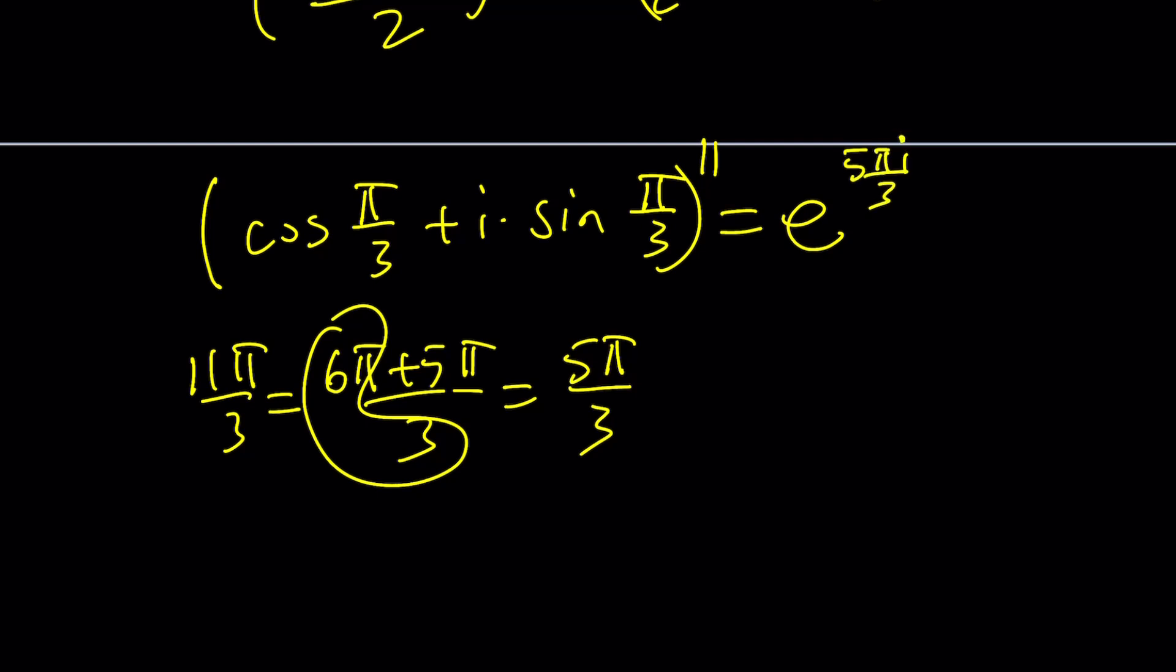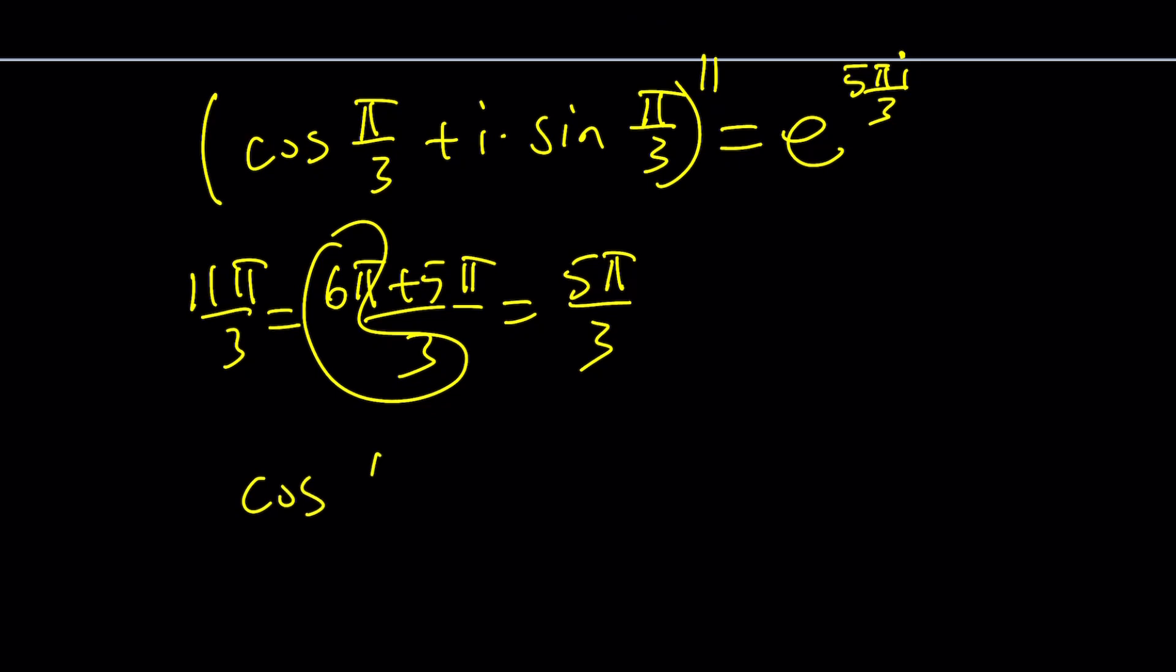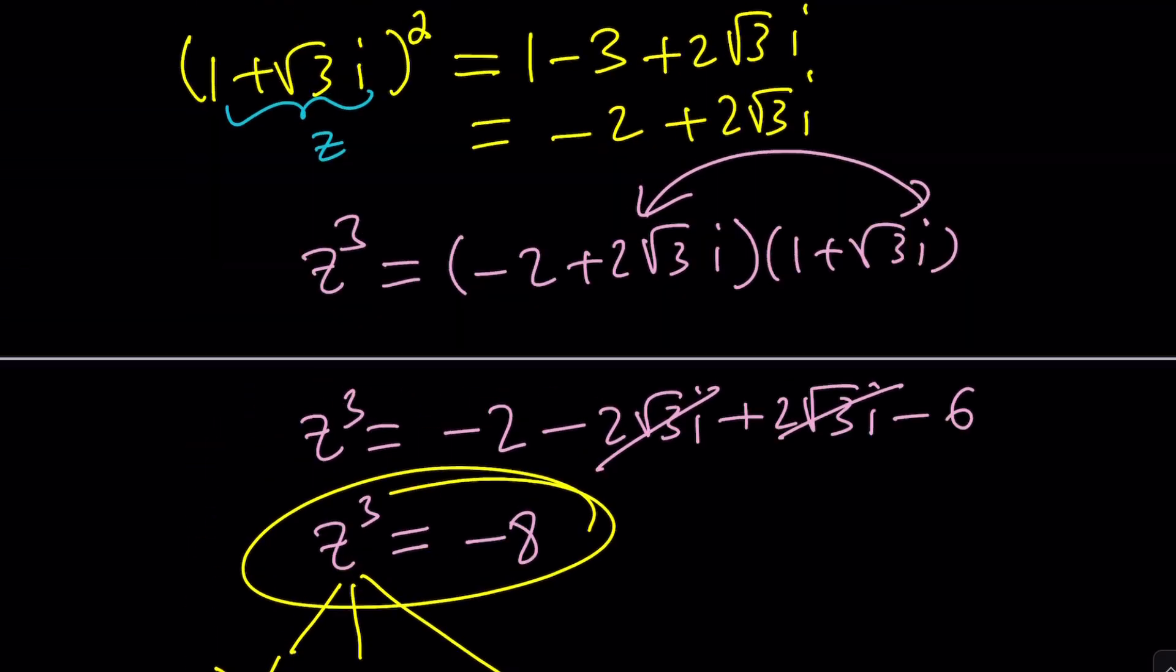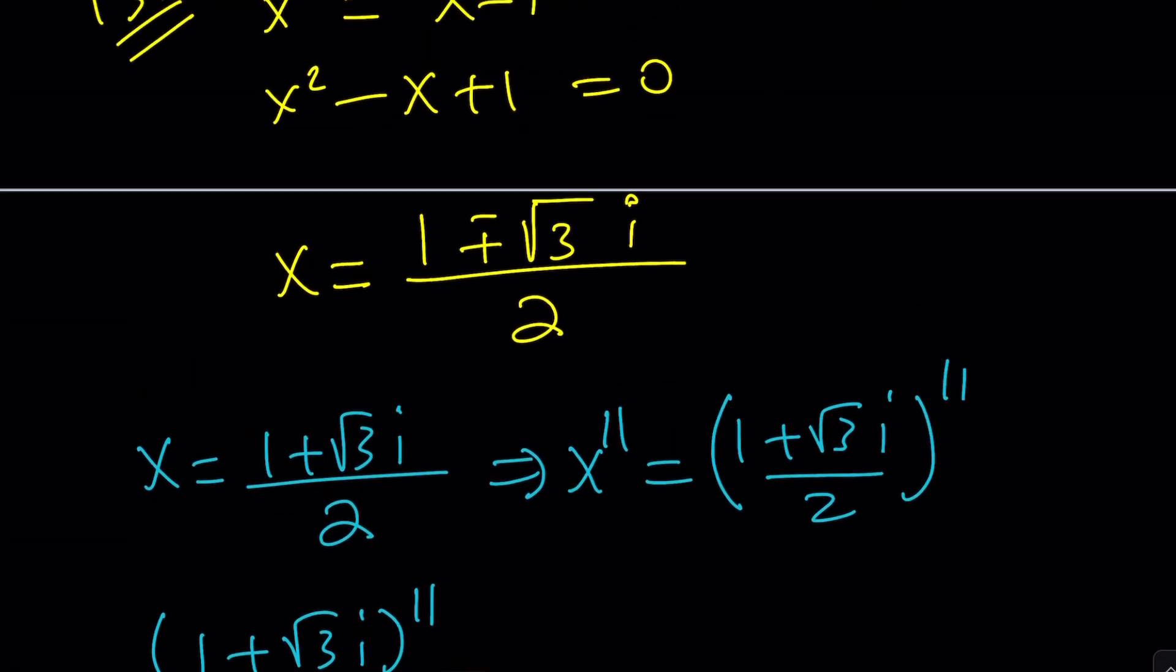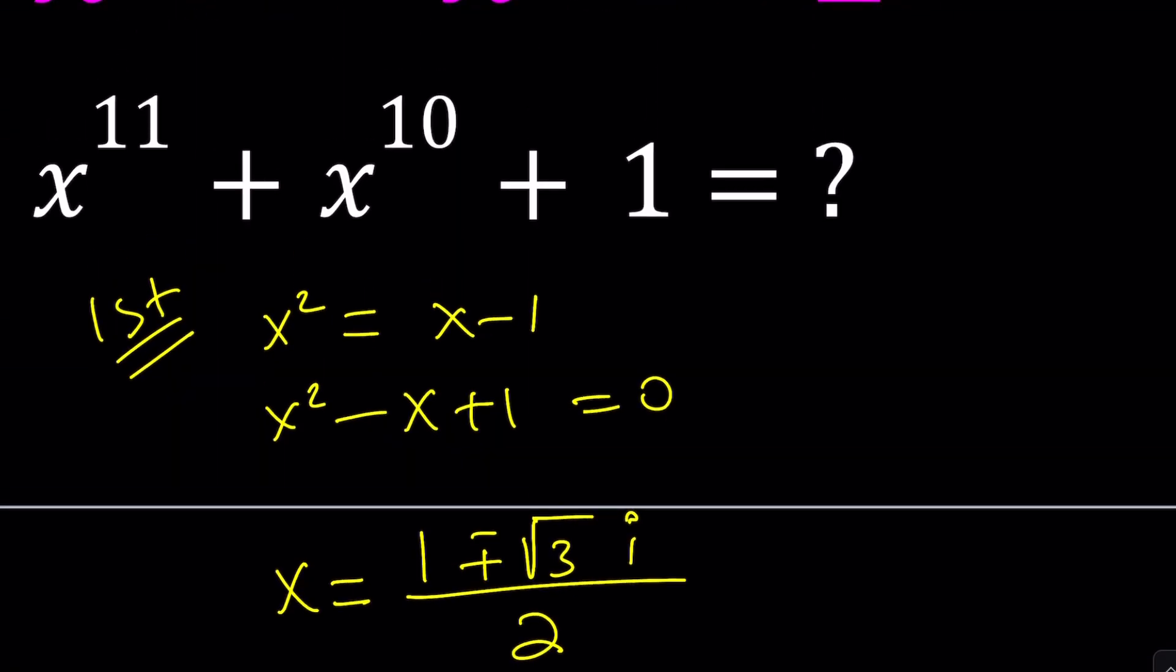And what about the 10th power? The 10th power is going to be something similar, right? And that should be 10 pi over 3, but 10 pi over 3 can be written as 4 pi over 3, so it's going to be 4 pi i over 3. And then you can just go ahead and plug all of that in here, okay? Now, here's another way to approach it.